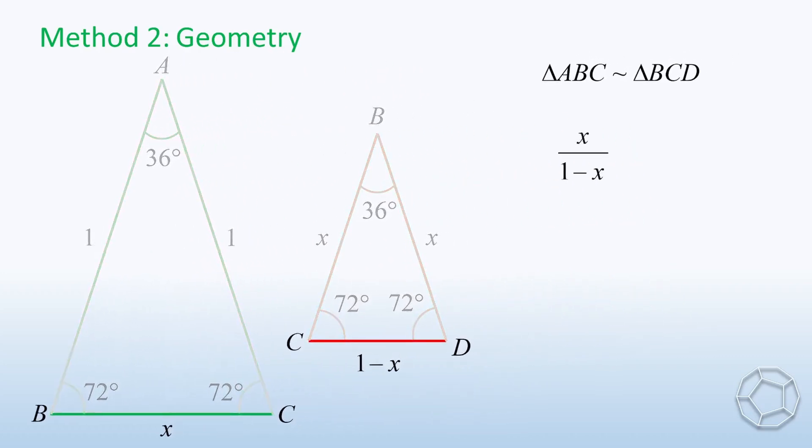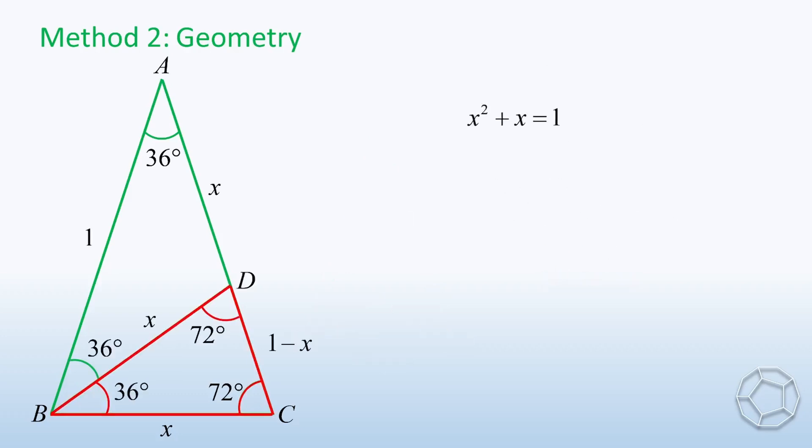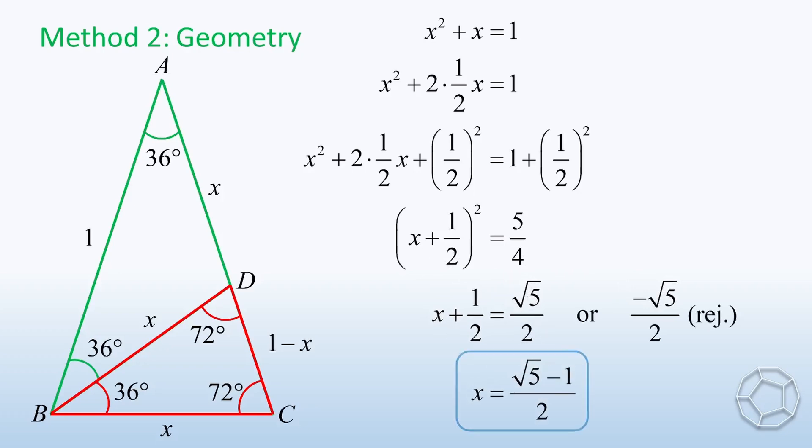X over 1 minus X is equal to 1 over X. Simplifying, we get X squared plus X is equal to 1. Let's apply completing square method again. We write X as 2 times 1 over 2X. Then, we add 1 over 2 whole square on both sides. So, the equation becomes bracket X plus 1 over 2 whole square is equal to 5 over 4. Taking square root, reject and simplify, we have X is equal to square root 5 minus 1 over 2.